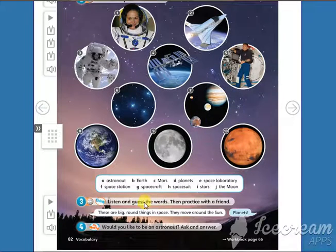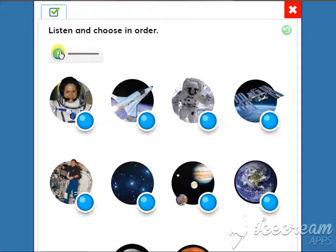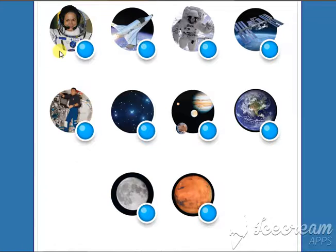Now, we're going to listen and guess the words. Okay? Pay attention. One. These are big round things in space. They move around the sun.